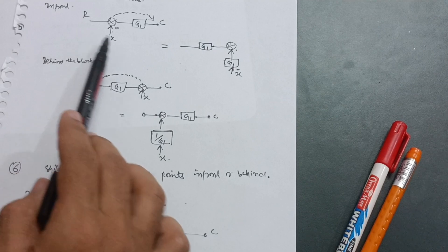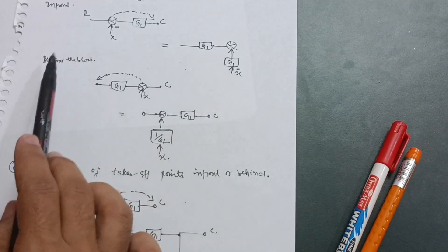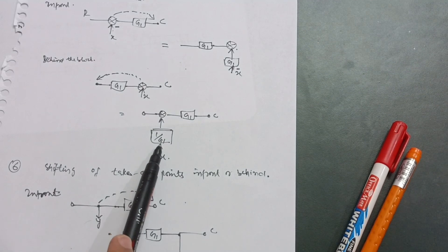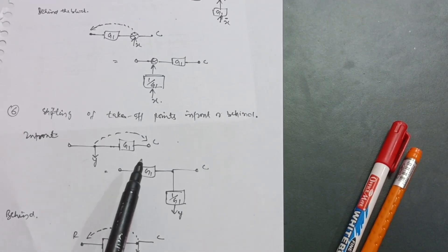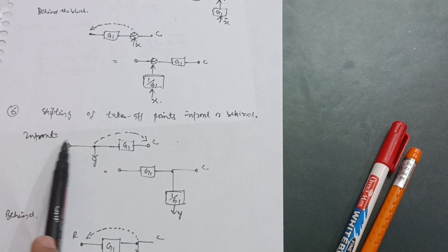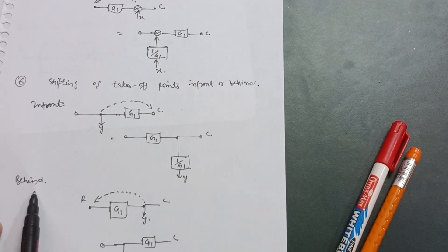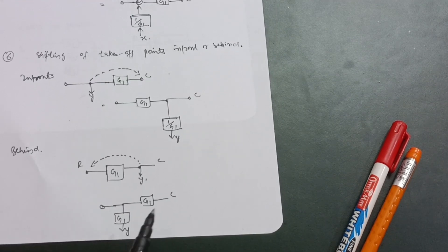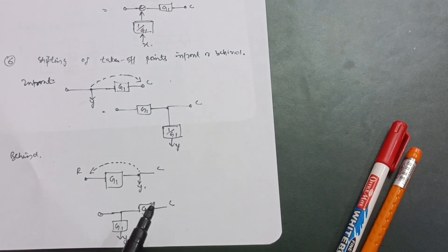This is the sixth rule, totally opposite of the fifth rule. For shifting summing points: in front — add G1; behind — add 1/G1. For shifting takeoff points: in front — add 1/G1; behind — add G1. These six rules are most important as far as VTU block diagram reduction problems are concerned.